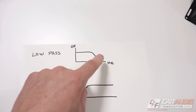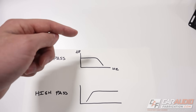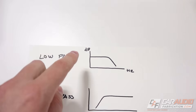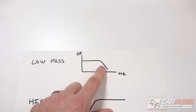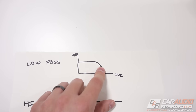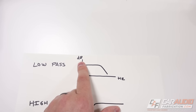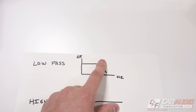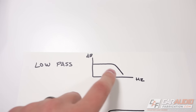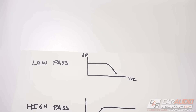That frequency axis runs from 20 hertz up to 20,000 hertz — our low bass up to our highest highs. On the y-axis is our output level; the higher up, the louder it is. With a low pass crossover, we're only allowing the lows below a certain point to go past. For example, at 100 hertz, everything below 100 hertz would play, but once we get above 100 hertz that output would roll off. A low pass is what you would use for a subwoofer.